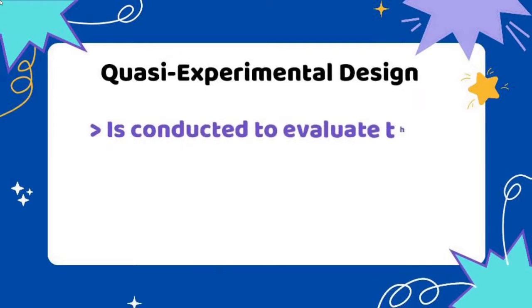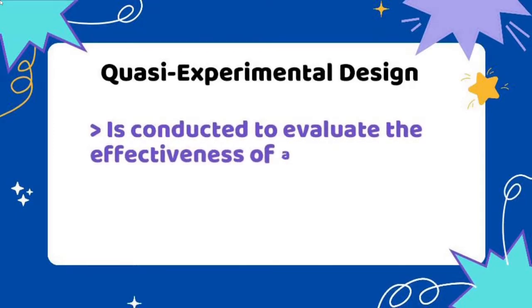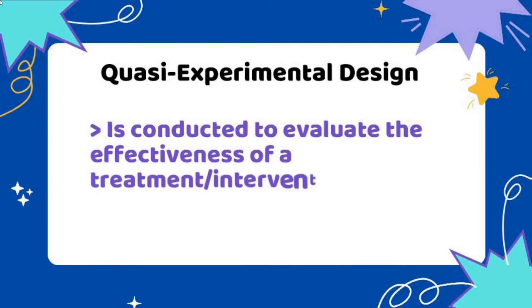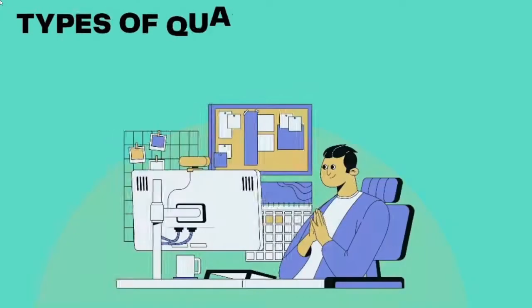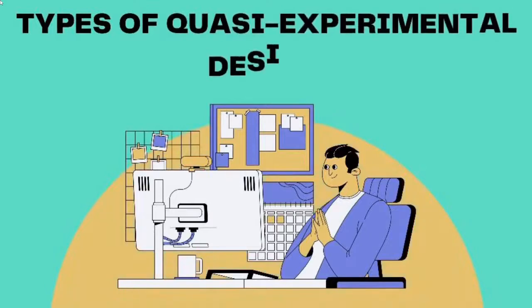The main objective of quasi-experimental design is to evaluate the effectiveness of a treatment or an intervention. Now let's proceed to the different types of quasi-experimental design.